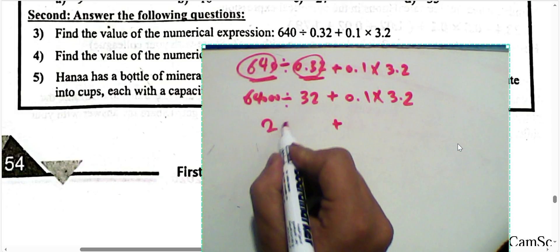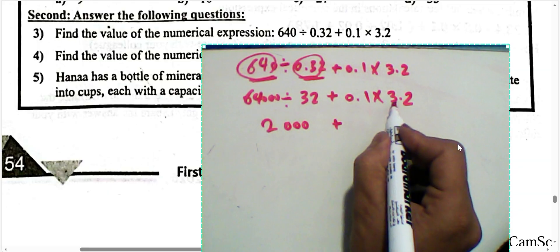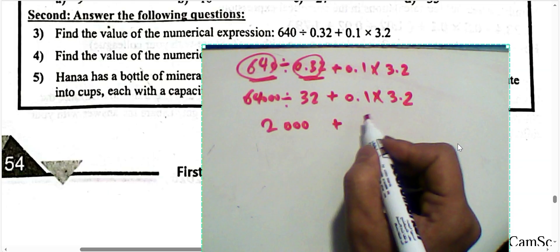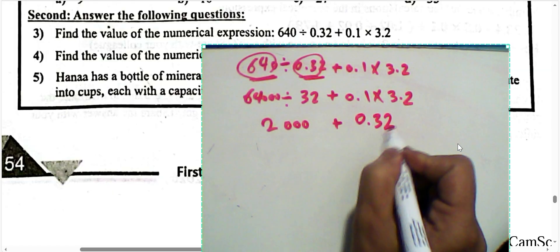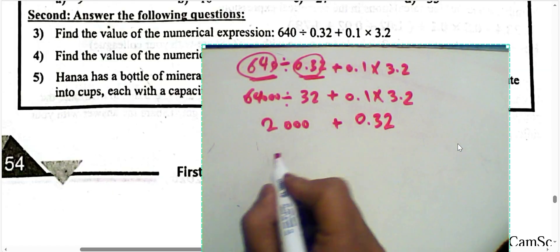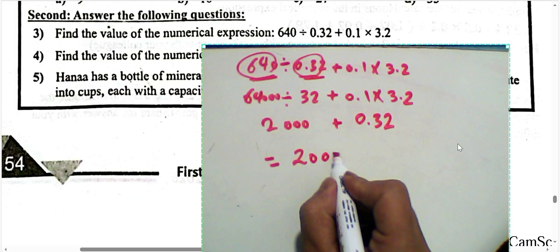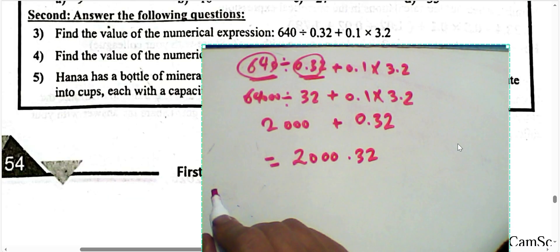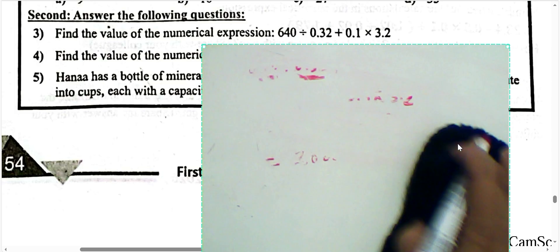64 divided by 32 equals 2, then write three zeros. For (1/10) times 3.2, this means 3.2 divided by 10 — move the decimal point one place to the left. The result is 3.2 tenths, so the answer is 2000 and 3200 combined. Understood?